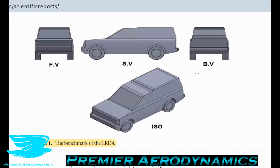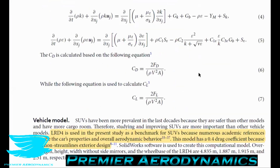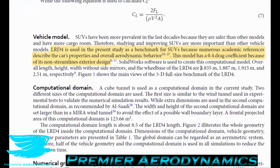The Land Rover Discovery 4 is a very blocky vehicle — it looks like a big station wagon with quite a flat back and not much taper. The Discovery is used as a benchmark for SUVs because numerous aerodynamic references describe its properties and overall aerodynamic behavior. However, SUVs are really changing these days — they're getting more tapered at the back. If you look at Lamborghini or Porsche SUVs, they are more tapered at the back, and while not typical run-of-the-mill SUVs, you can see that trend starting to trickle down.